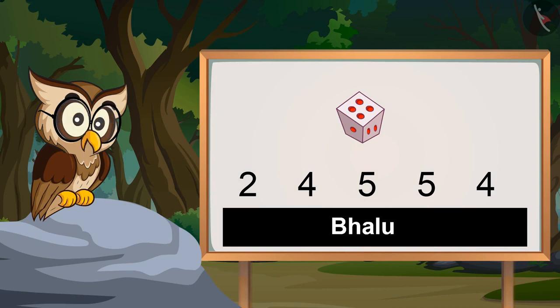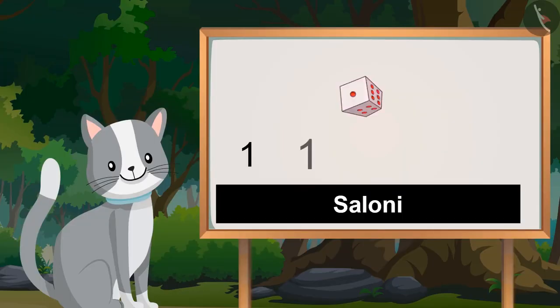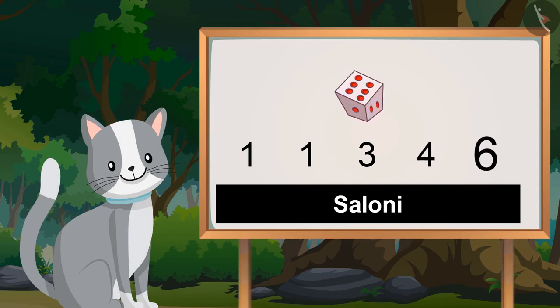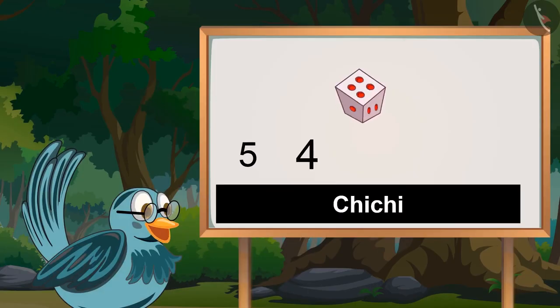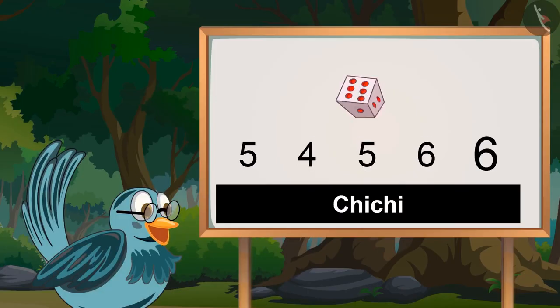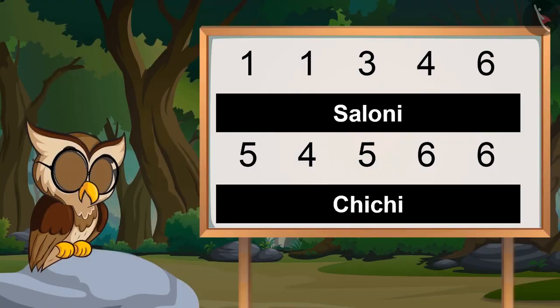Now Chichi and Saloni, turn by turn roll the dice and see what numbers you get. One, one, three, four, six. Five, four, five, five, six, six. So Chichi and Saloni got these numbers on the dice.